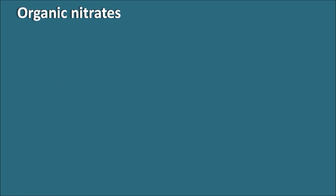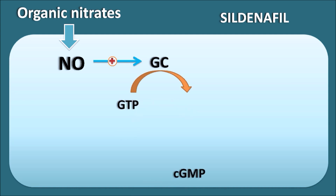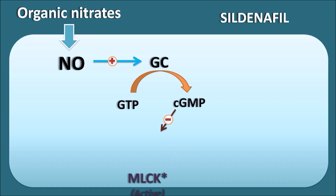Now let us see the interaction between organic nitrates and sildenafil. Organic nitrates increase nitric oxide release. This released nitric oxide then activates the guanylate cyclase enzyme, which converts GTP into cyclic GMP. Cyclic GMP acts as an important secondary messenger within the vascular smooth muscle, and it inhibits the active form of MLCK, which is required for contraction of the vascular smooth muscle.